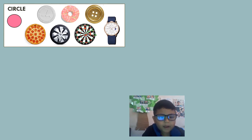We can see the circle everywhere. It is the shape of pizza, coin, wheel, donut, cardboard, button, and watch.